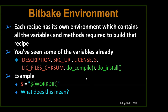You can use 'bitbake -e' here. The -e option says, tell me what the environment variables are. You can use it without a recipe and it will tell you the entire environment. That's not very useful unless you've started at the beginning and haven't actually built anything yet — you've done all the parsing steps but haven't started to build. After you start building, it's really only useful on a recipe-by-recipe basis.